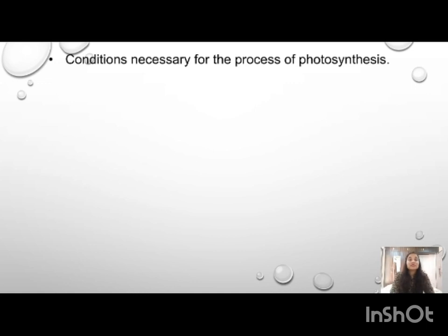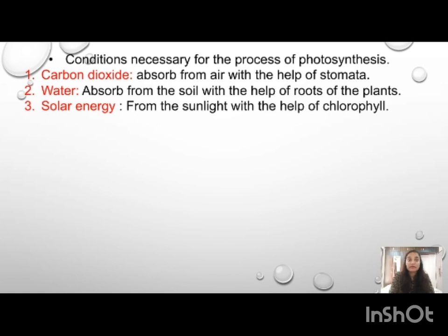Now, the conditions necessary for the process of photosynthesis are: first, carbon dioxide — plants absorb it from the air with the help of stomata. Second, water — plants get water from the soil with the help of roots. Third, solar energy — plants get solar energy from sunlight, but to absorb this solar energy they require chlorophyll.